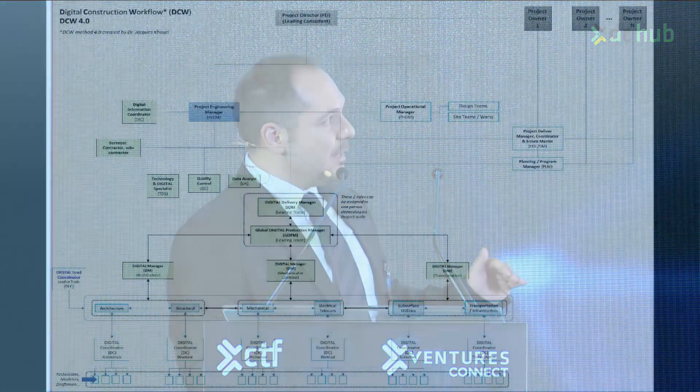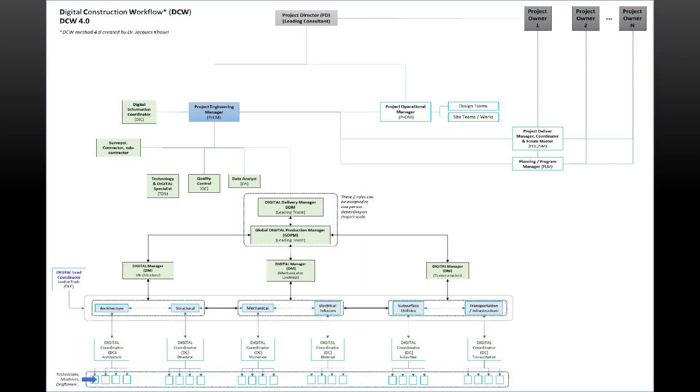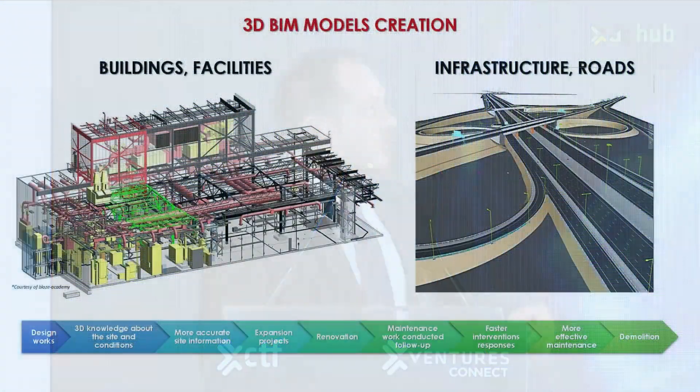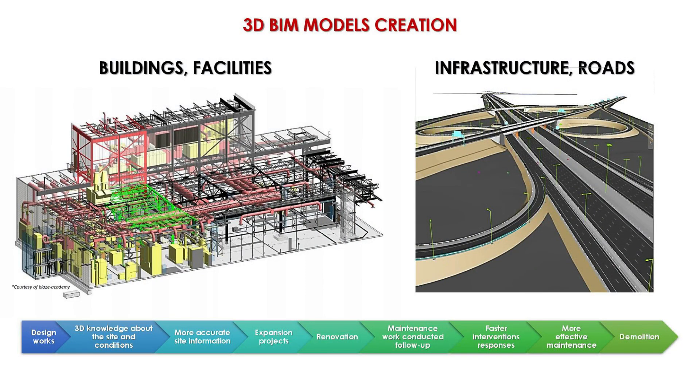We are also introducing new roles such as Scrum Master, Agile Coach, Data Analyst, Technology and Data Specialist, and Digital Information Coordinator — all concentrated around data, which is critical and strategic for moving projects forward. There are now two simultaneous roles at the same level: the Project Engineering Manager and the Project Operation Manager, alongside a Project Director. More details will be found in the guidelines.